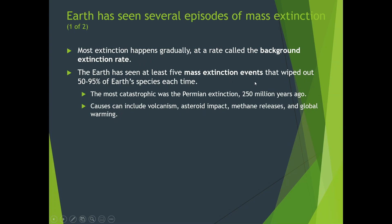The Earth has seen at least five mass extinction events that wiped out about 50% to 95% of Earth's species each time. The most catastrophic was the Permian extinction about 250 million years ago — that's when a comet hit the Yucatan Peninsula, blew material into the air, blocked sunlight, and plant matter disappeared. Most dinosaurs were plant eaters, so without food and sunlight, they couldn't survive. There was also volcanism happening simultaneously — a double whammy — and the dinosaurs could not adapt fast enough.